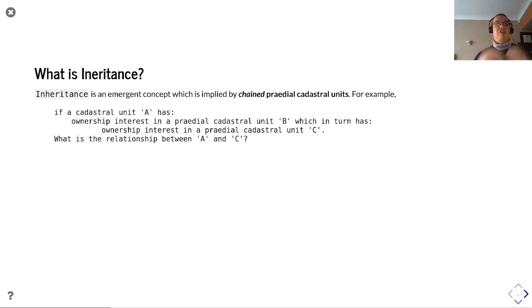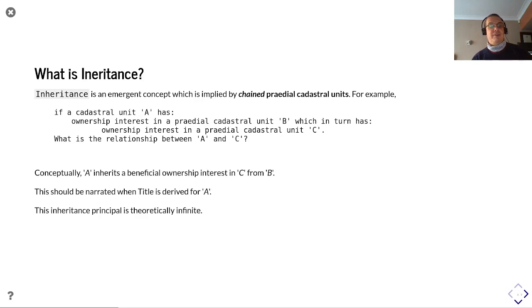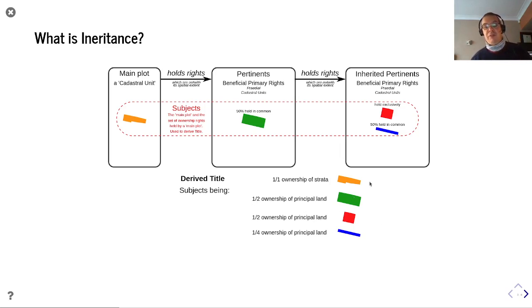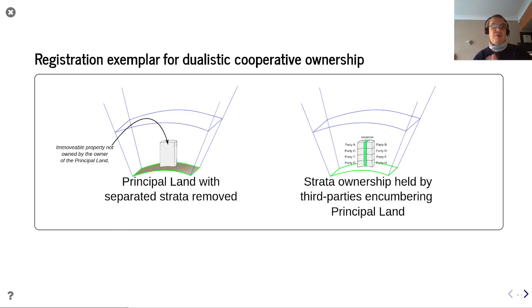Inheritance is another emergent concept implied by chained pradial cadastral units. For example, if cadastral unit A has an ownership interest in pradial cadastral unit B, which in turn has an ownership interest in pradial cadastral unit C, then conceptually A inherits a beneficial ownership interest in C from B, and this should be narrated when title is derived from A. This inheritance principle is theoretically infinite. So here we see a flat has a 50% interest in the flatted building, and that flatted building itself has exclusive ownership of a piece of ground and 50% ownership over something else — looks like a pathway or shared driveway. When you derive title, you have exclusive ownership of the strata, 50% ownership of the flatted building, and derive a new amount from what was held exclusively by the flatted building.